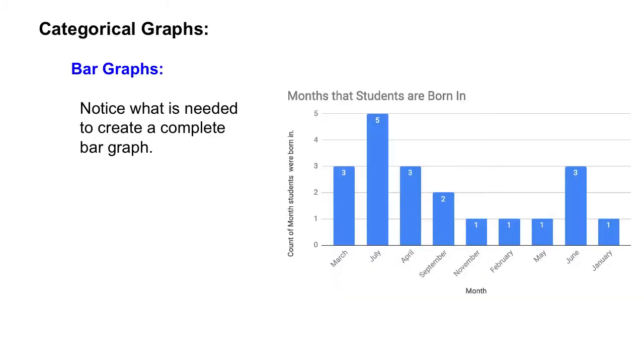This video is about bar graphs. Bar graphs are a type of graph that can be used to represent categorical data.